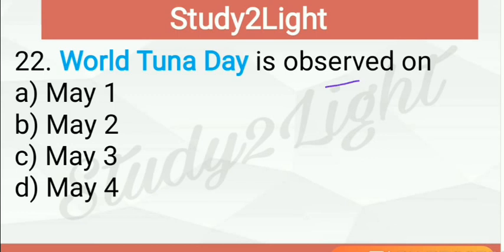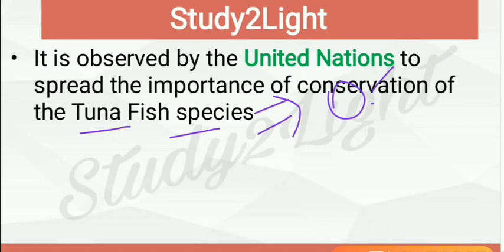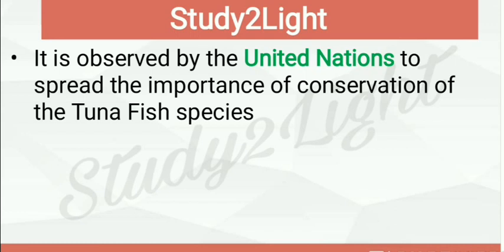Next question: World Tuna Day is observed on — World Tuna Day is observed on May 2nd, so B is the right answer. It is observed by the United Nations to spread awareness about the importance of conservation of tuna fish species, because it has a significant role for developing countries. If you find the video useful, share it with your friends, like the video, answer the question in the comment section, and stay at home, stay safe. Thanks a lot.